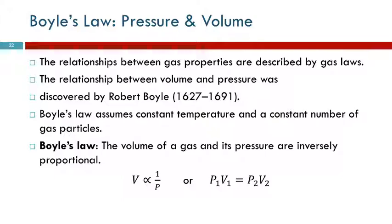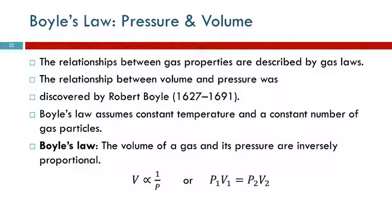One way to express Boyle's law is that volume is proportional to one over the pressure — that's an inverse relationship. If one goes up, the other goes down. The other way to express it, which we need to be familiar with, is: P1 V1 equals P2 V2.